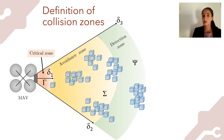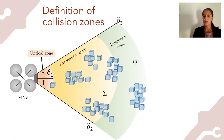Here we see how we defined the three collision zones. If an obstacle is detected inside the detection zone C, no repulsive force is computed. If an obstacle is detected inside the avoidance zone sigma, we start computing a repulsive force so that the robot can avoid the obstacle. If an obstacle is detected inside the critical zone, it might be too late to avoid the collision, which is why we start the repulsion action as soon as we enter the sigma zone.